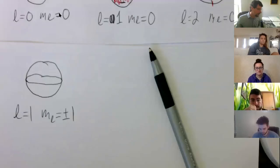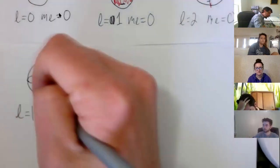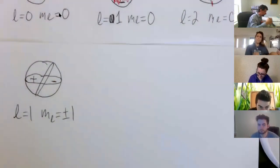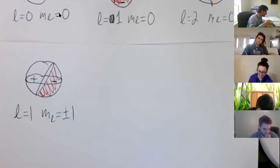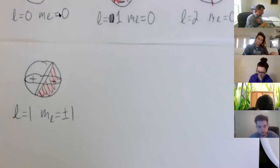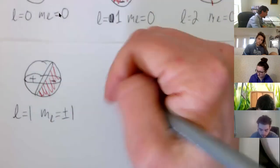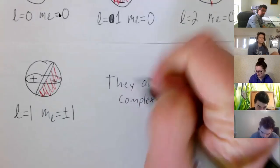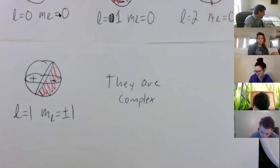Going back to drawing these: for that case, there's a cut in the center where we have a negative and a positive value. They get complex—they're a combination of both the theta and phi parts interacting.